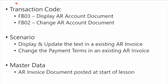For this lesson, we're going to look at that same AR manual invoice, and this time we're going to look at display and change transactions. The business scenario here is that you may want to change the text in an invoice for reference purposes, or you might have to change the payment terms of a manual invoice if they were incorrect. So what we're going to do is post a fresh invoice at the start of the lesson and work with that document for display and change. Let's jump into that.